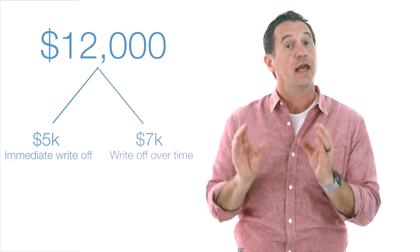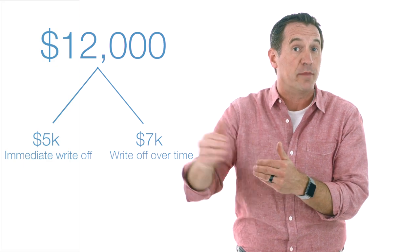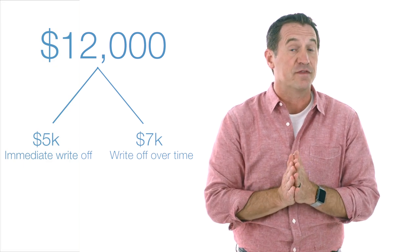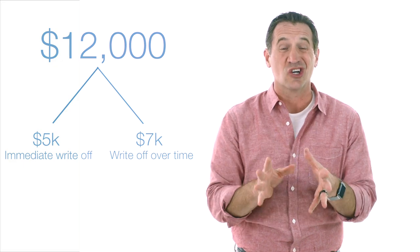The amortization period is 15 years and you may think that's a long time. But if you ever close down the business they rush forward and you get to write them off the day you close your business. Until then you have to write them off over time.